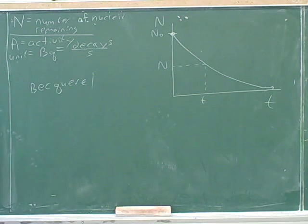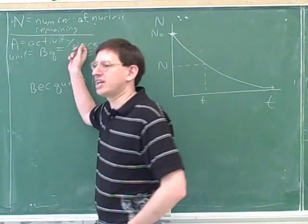For example, if you have something very radioactive, it might have millions of decays per second. On the other hand, if you have something that has very low radioactivity, maybe it only has two or three decays per second, or whatever. So this is telling us how many of the nuclei are decaying each second.